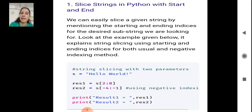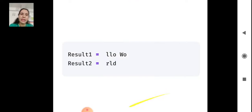But we stop at 8 minus 1 because we are taking a step value of 1. Here we have not mentioned the step value, but by default it is incrementing by 1. Step value is 1 by default. So it gives the result as 'llo Wo'.